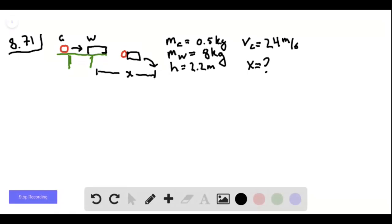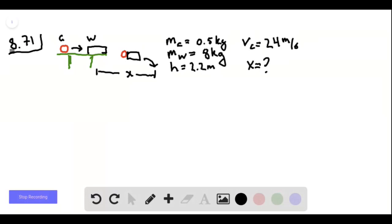Problem 8.71. We have a ball of clay and a block of wood on a massless table, or on a frictionless table. It may also be massless, it doesn't really matter for this problem.